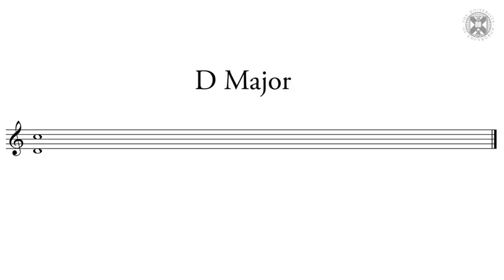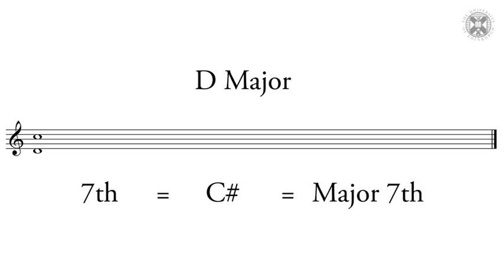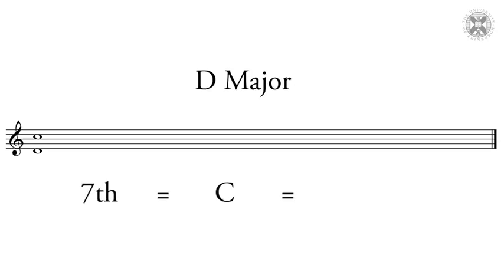We've got the number — we know it's a seventh. Now we need to think about the quality. A good way to do this is to take the lowest note and imagine you are in its major key, so the lowest note is the tonic. In this case we're in D major, which has an F sharp and a C sharp, meaning the seventh degree of D major would be C sharp — a major seventh. But here we have a C natural, which is a semitone lower than the C sharp we'd expect. When a major interval is made smaller like this, we call it a minor interval.